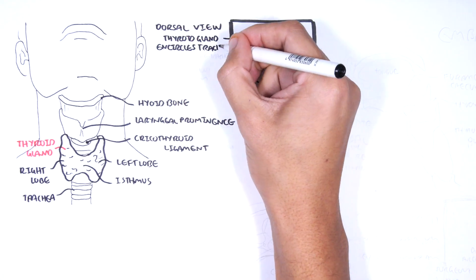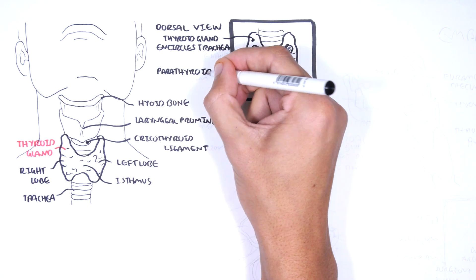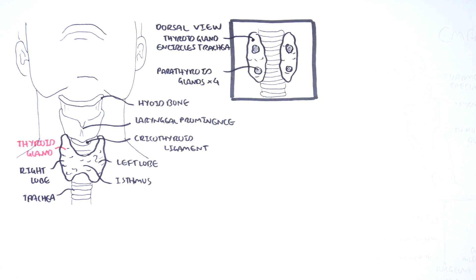From this dorsal view, we can see that there are four parathyroid glands which sit on the thyroid gland, two on each side.